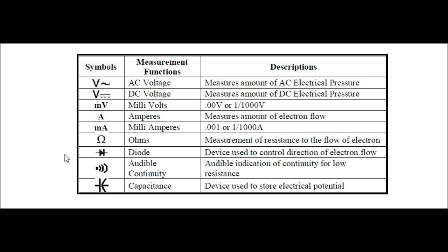Number seven: the diode symbol represents a device used to control the direction of electron flow. Number eight: audible continuity — provides an audible indication of continuity for low resistance. Number nine: capacitance — a device used to store electrical potential.